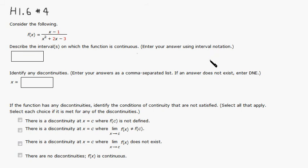Okay, let's go over Hallmark 1.6, number 4. We have a rational function given, and we know that the rational function is continuous on its domain. So we just have to find its domain.